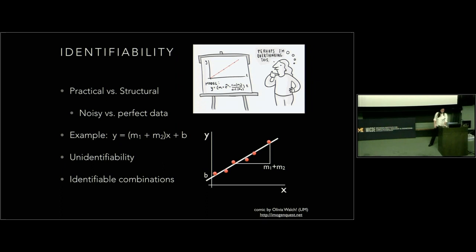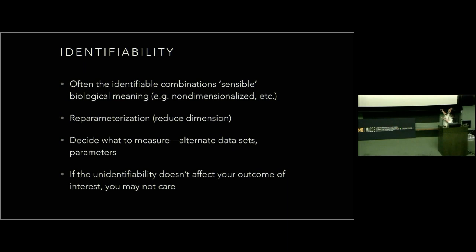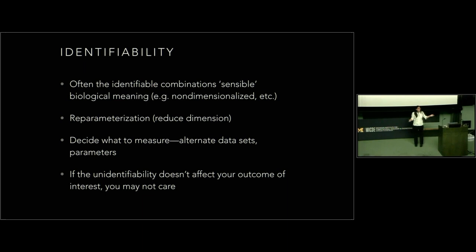This is obviously a trivial example, but in real-world models these issues come up all the time and they're not always obvious. The parameters are not always neatly together, and things like non-dimensionalizing don't always get rid of these combinations. What can you do? The identifiable combinations often have sensible meaning. You can re-parameterize or reduce the dimension of your model by squashing them together. You can also change what you measure — measure some other dataset or measure some parameters explicitly. And if the unidentifiability doesn't affect your outcome of interest, you can just leave it. Though it can make some optimization or parameter estimation algorithms behave badly, so you have to be a little careful.